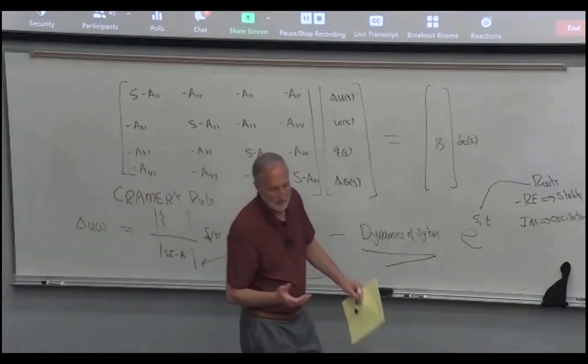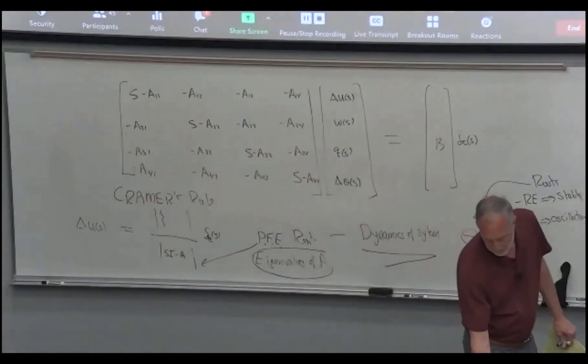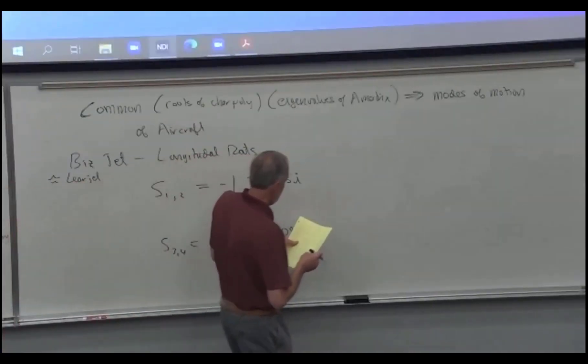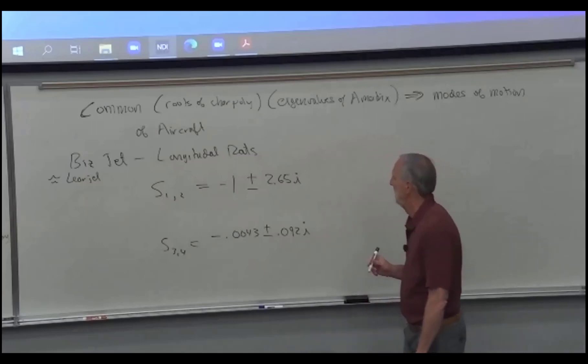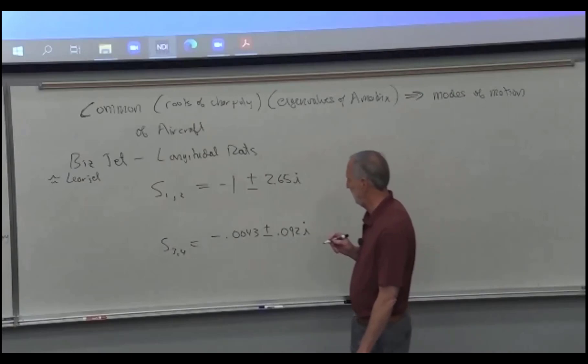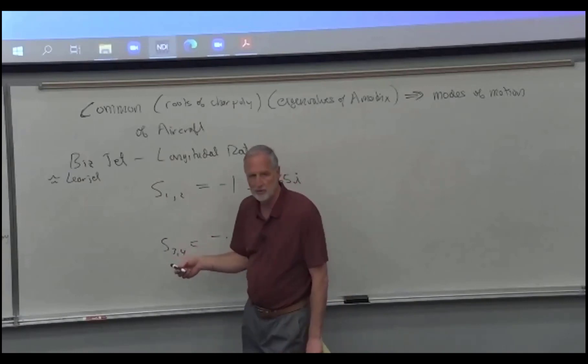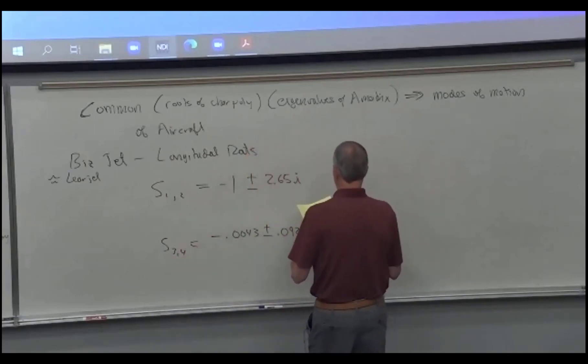That's always true with this state space form: if you have a four-by-four matrix, you're going to get four roots. If you have a five-by-five, you get five roots. And because people like to name things when they talk about them, rather than just saying remember that first and second root that we got for this airplane, or the third and fourth root, we name these.